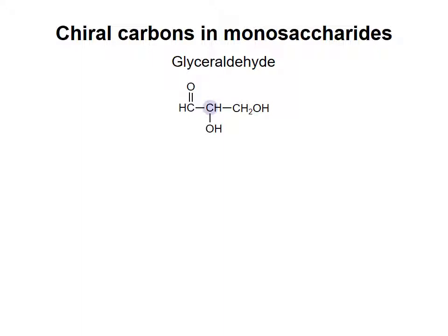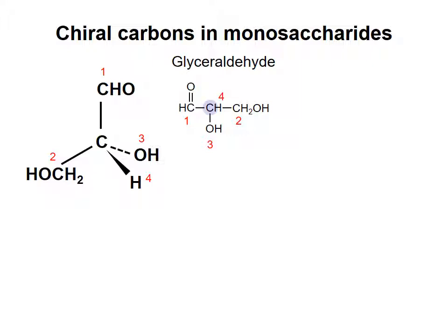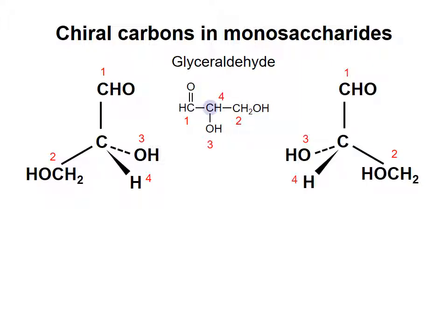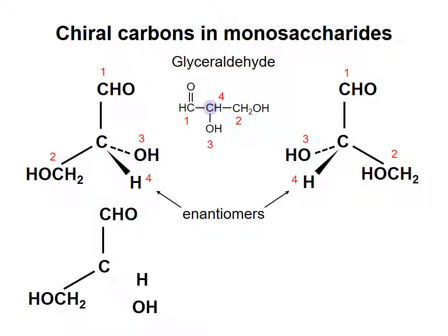Notice that the middle carbon atom in glyceraldehyde has four different chemical groups attached to it: the aldehyde carbon on the left, the hydroxyl carbon on the right, a hydroxyl group directly attached, and a hydrogen atom. These four chemical groups form a tetrahedral arrangement around the central carbon atom. There are two different ways that the four groups can be arranged in three-dimensional space. The two possible molecules are mirror images of each other and are called enantiomers. Two enantiomers have the same chemical groups but cannot be superimposed on each other and therefore are distinct molecules. To make them exactly the same, you would have to break two of the bonds and reattach the chemical groups in the other orientation.